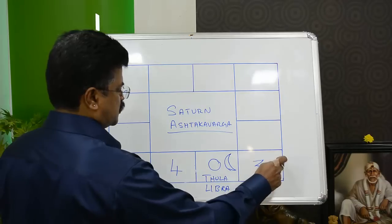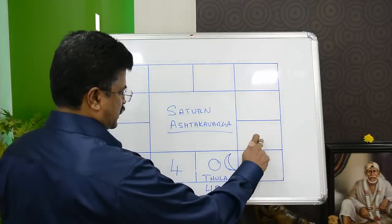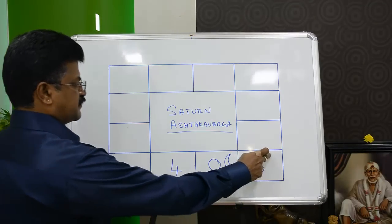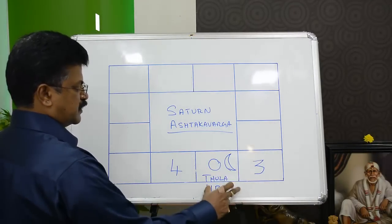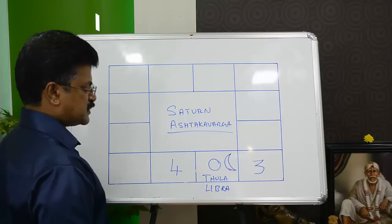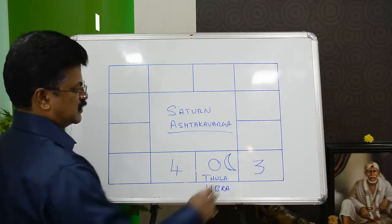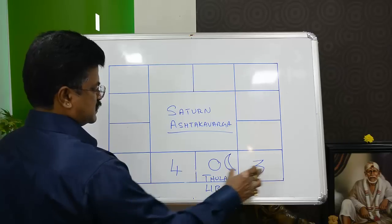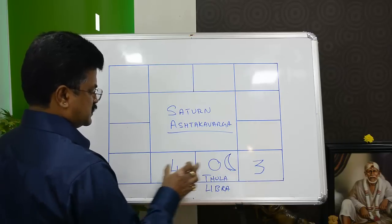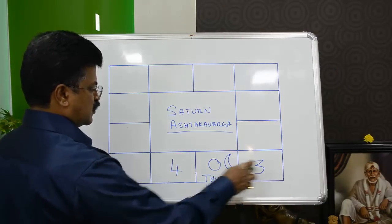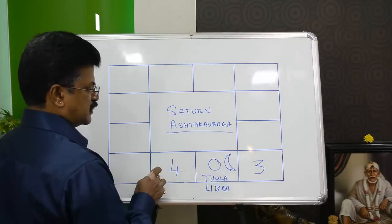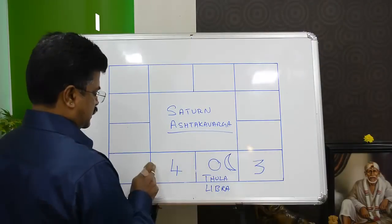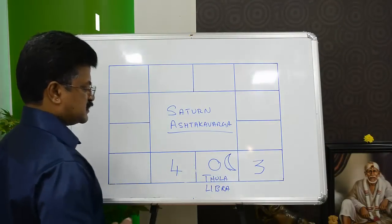When Saturn enters this sign, the 7.5-year Saturn phase starts for all people of the moon sign Libra or Thula Rasi. Saturn stays in each of the three signs for 2.5 years — here for 2.5 years, here for 2.5 years, and here for 2.5 years. The total time taken for Saturn to enter and exit is therefore 7.5 years.